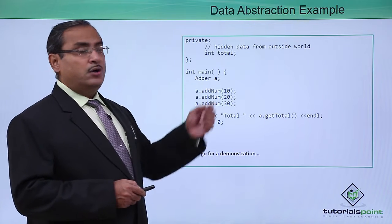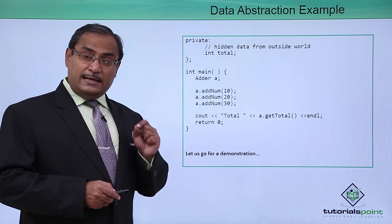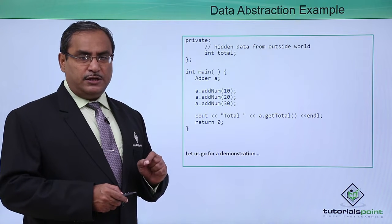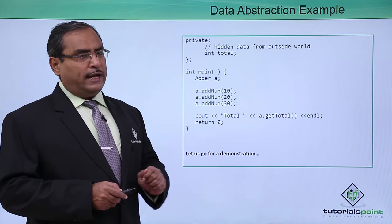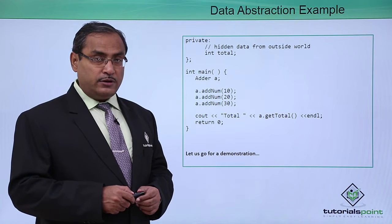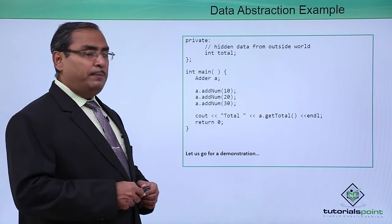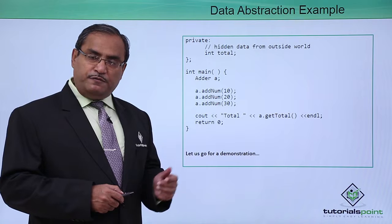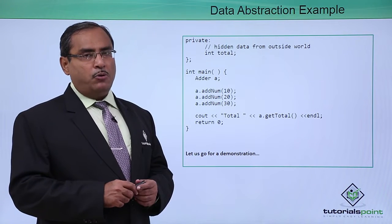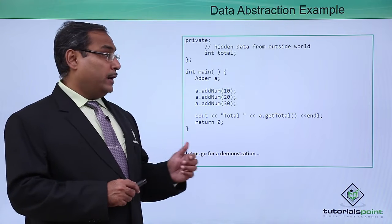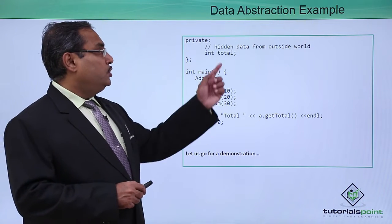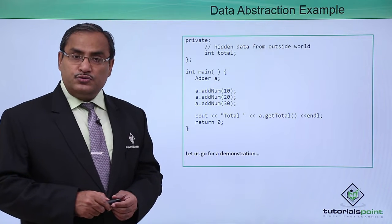Under the private section, we have the variable total. Since total is defined under the private section, it is not accessible from the outside world. However, all member functions defined within this class can access total. It is hidden data from the outside world.